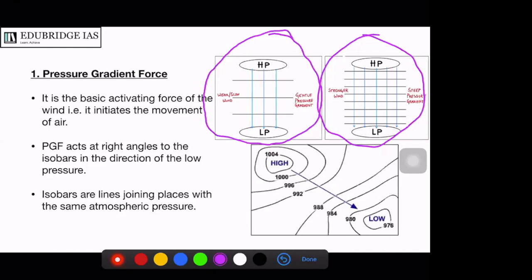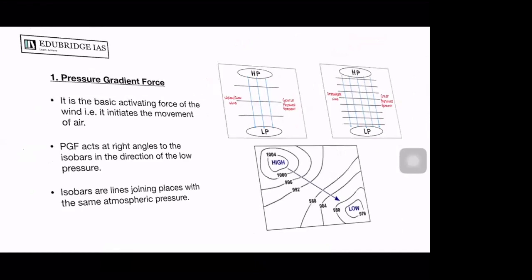The pressure gradient force is the basic activating force of the wind and it determines wind speed. It acts at right angles to the isobars in the direction of low pressure — from high pressure towards lower pressure.